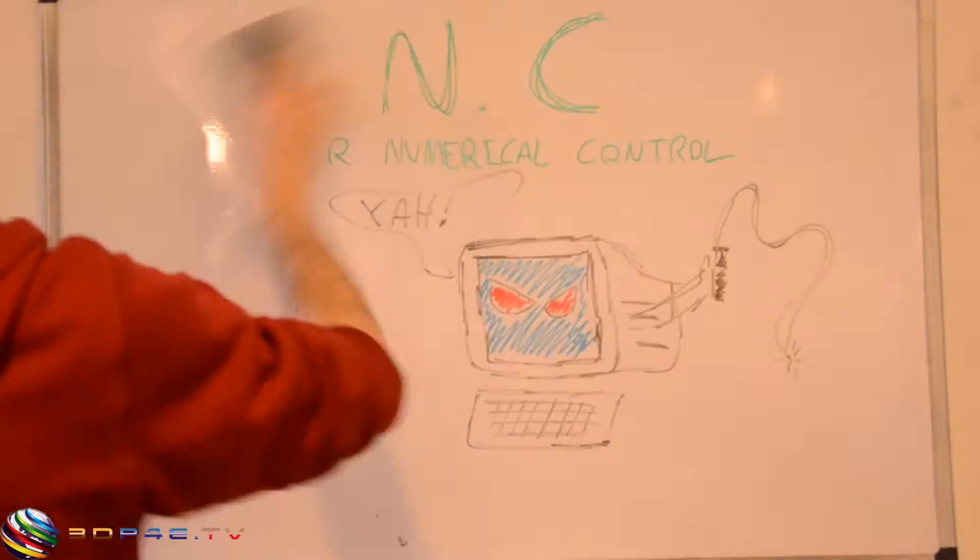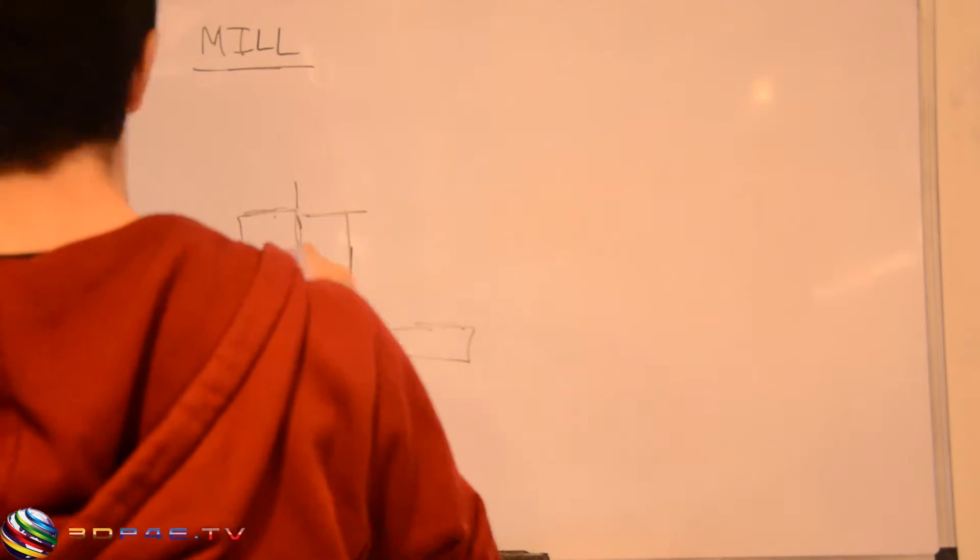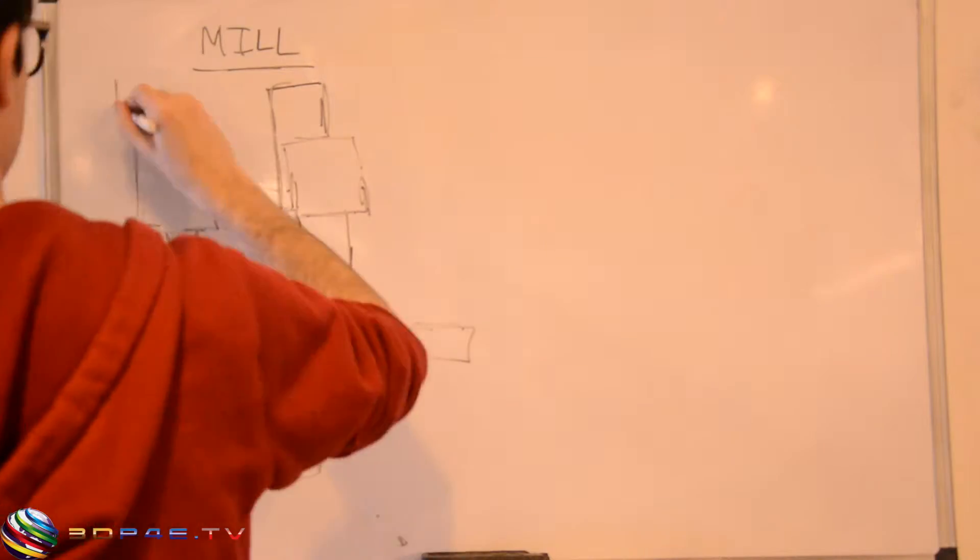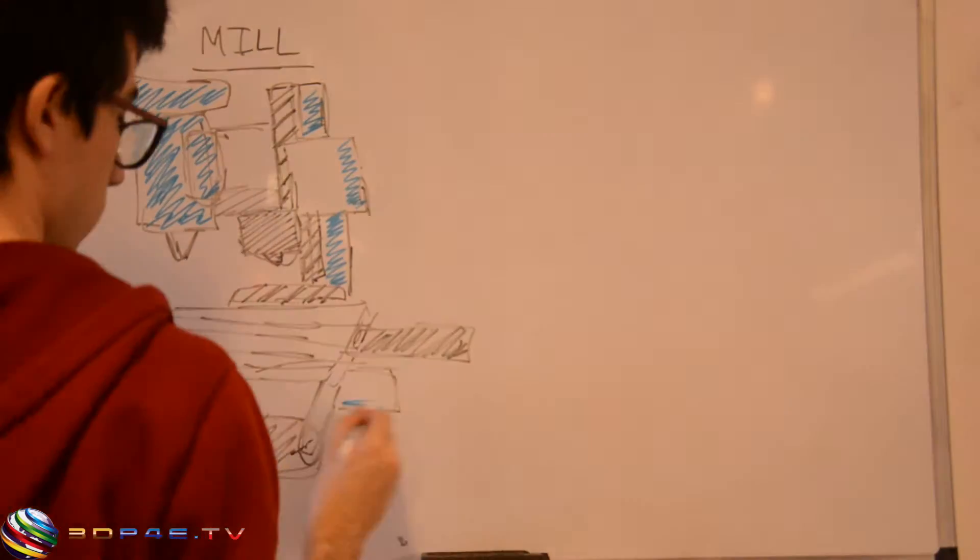So a CNC mill is like a normal mill or a lathe. It carves a shape out of a block of wood, metal, foam, or other materials using the data it receives from the computer.